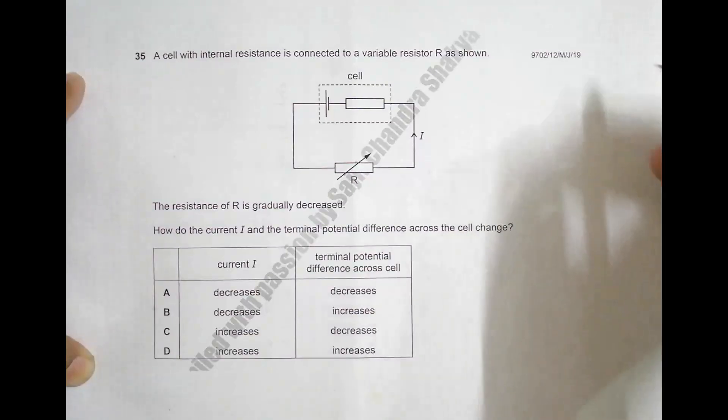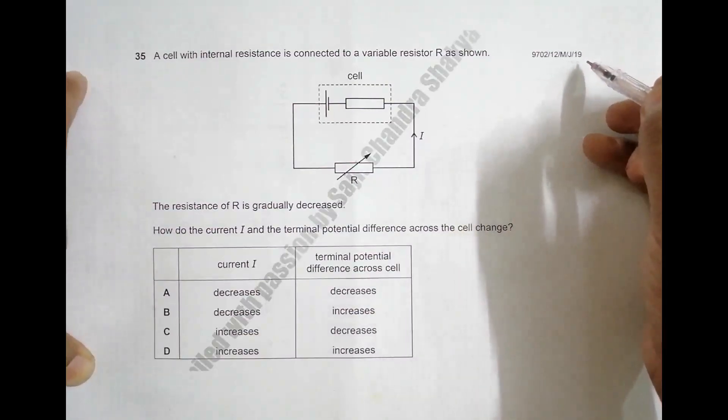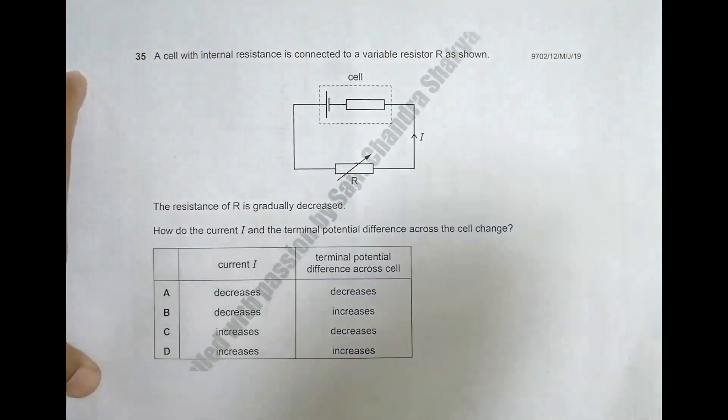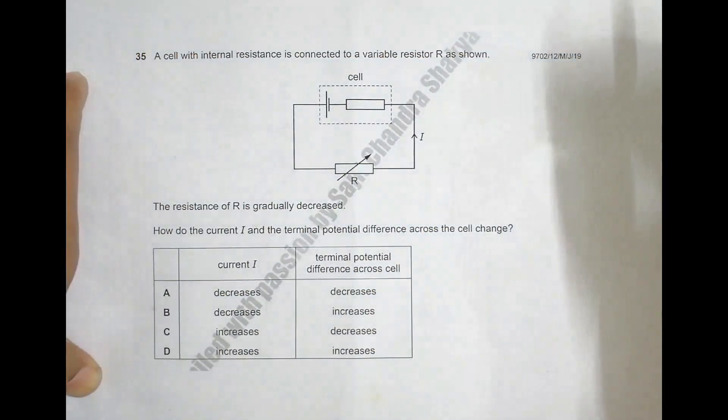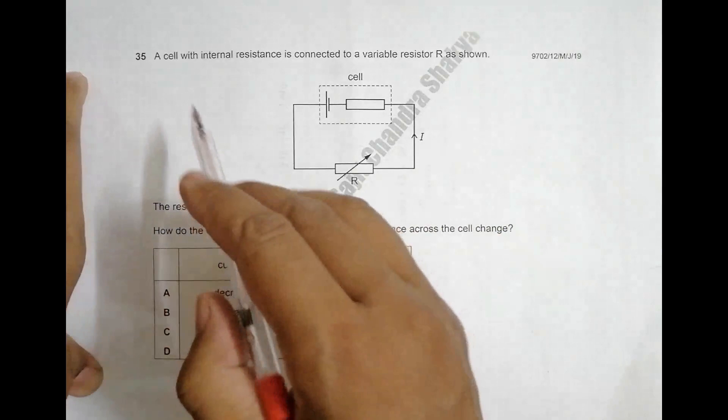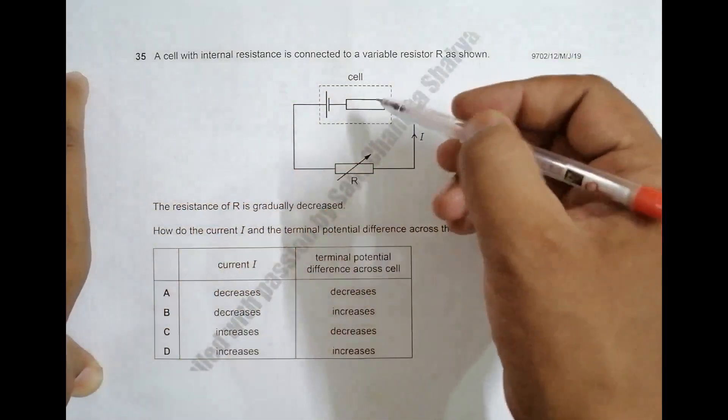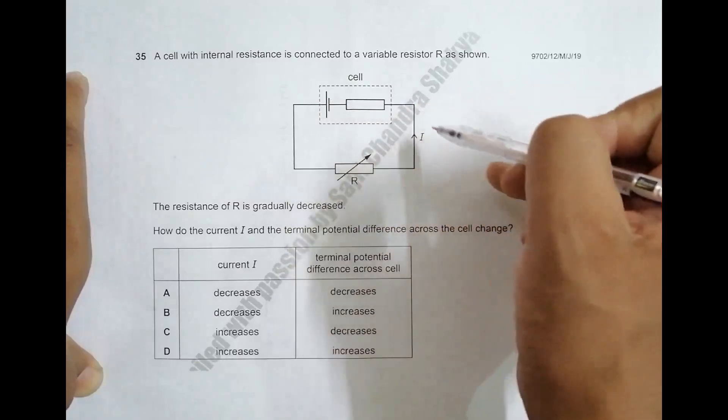Hello folks, this is 2019 May/June paper 1 question number 35. This question is concerned with current electricity. I've been dealing with a lot of questions about current electricity recently. A cell with internal resistance is connected to a variable resistor R as shown.